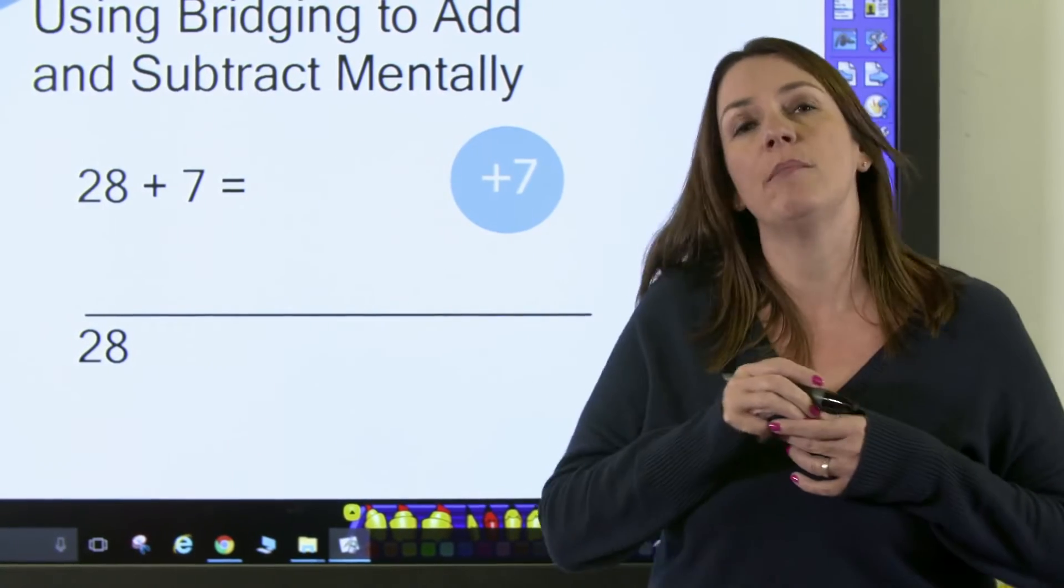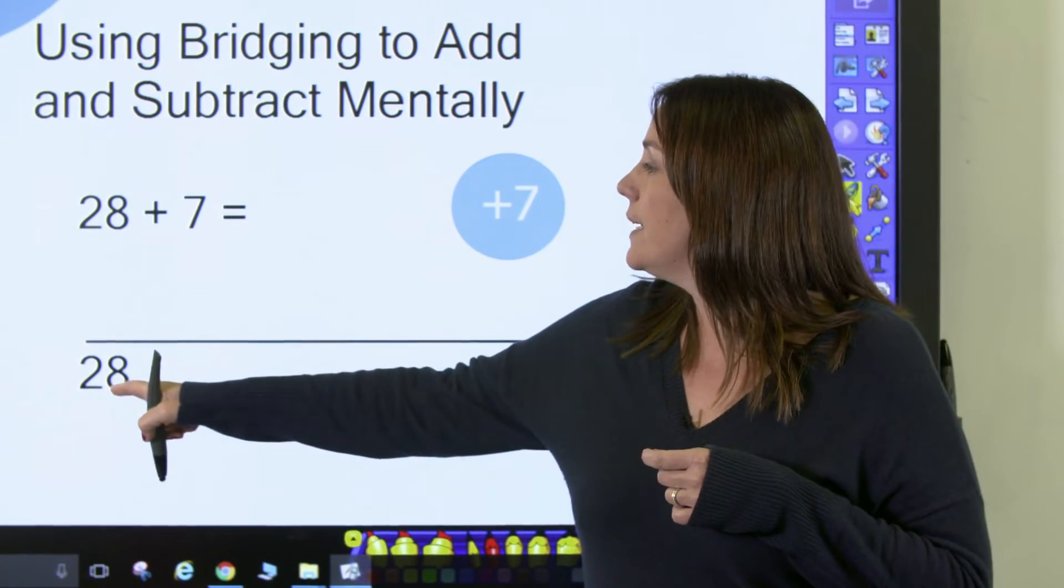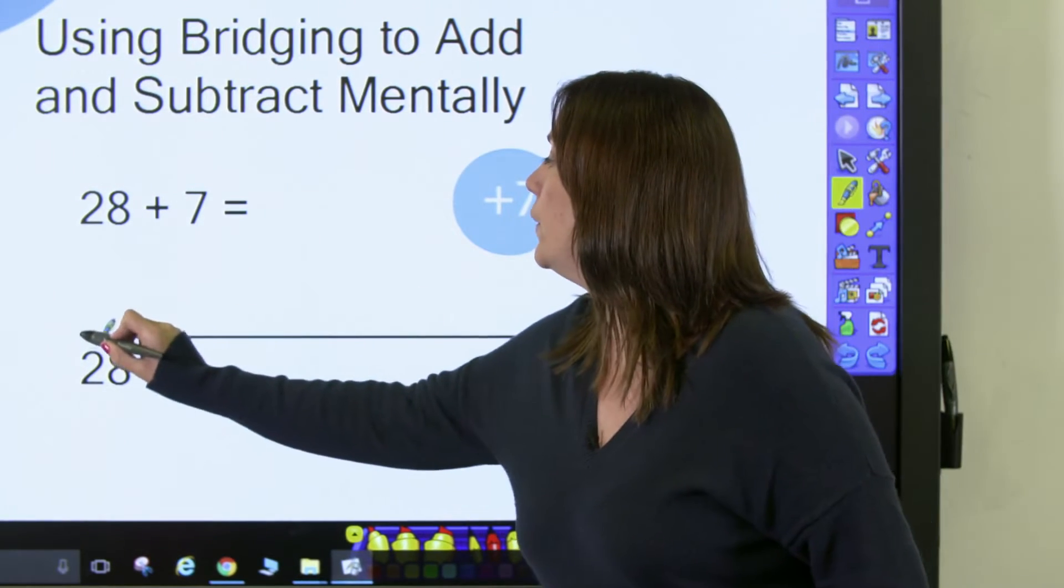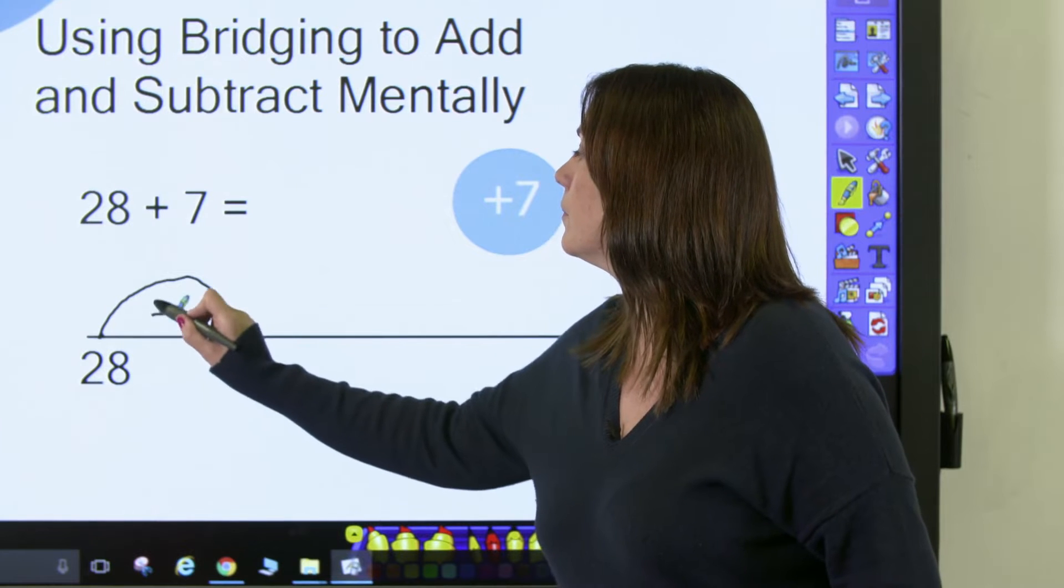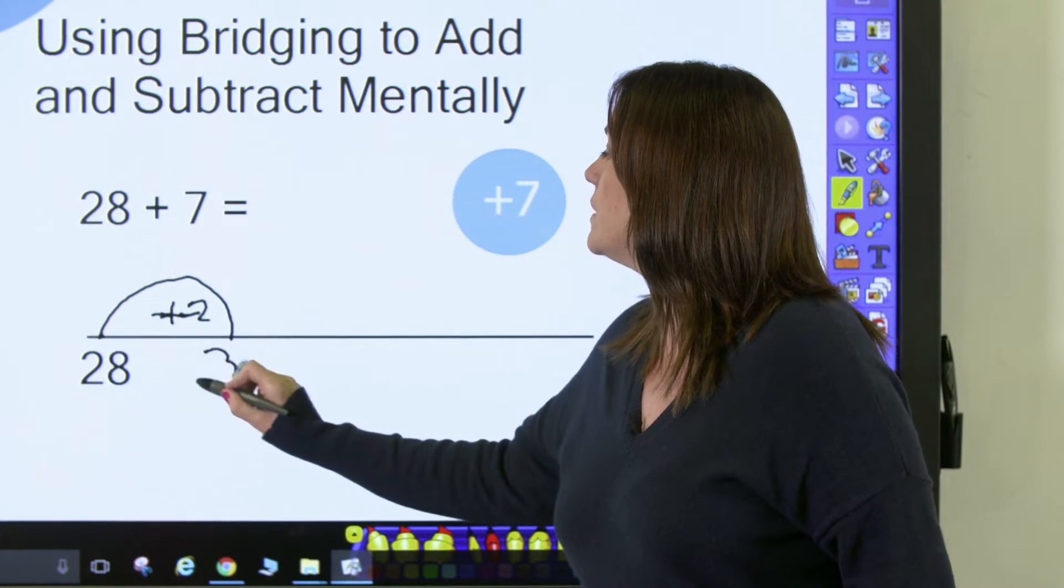I can use this by partitioning my 7 and using number bonds. So I know that to get to 30 I need to add 2. So I'm going to do a jump of 2, and that will take me to 30.